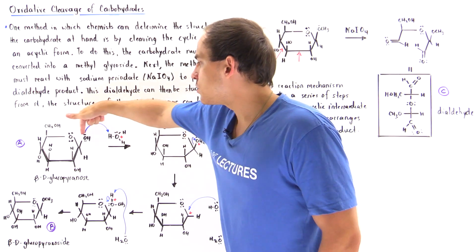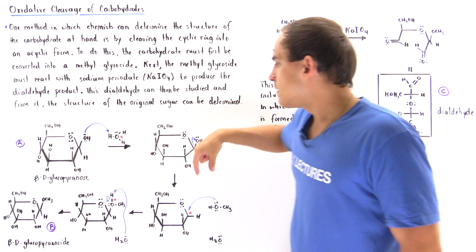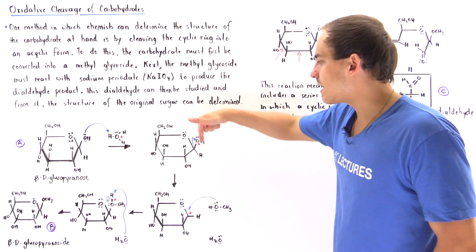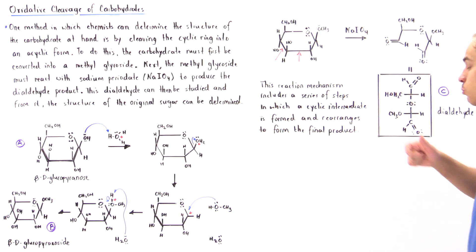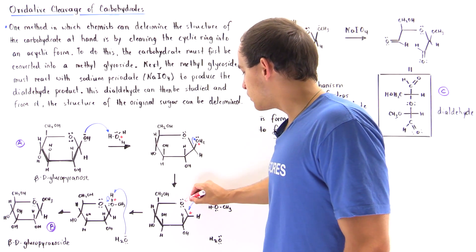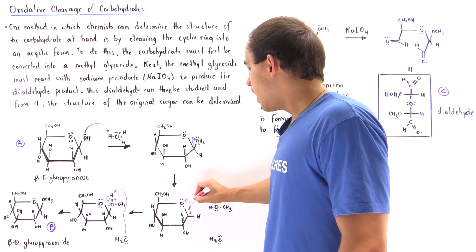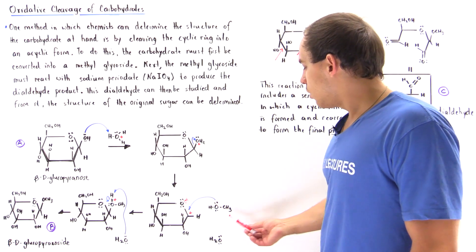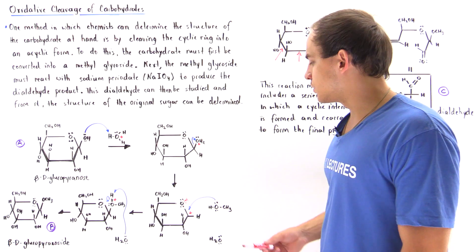So in step number one, we mix it with the hydronium, which protonates this oxygen, forming a good leaving group. And then in the second step, this leaving group departs, and we basically form a resonance stabilized intermediate in which we have the delocalization of positive charge between this carbon and this oxygen. Now we also form this water molecule.